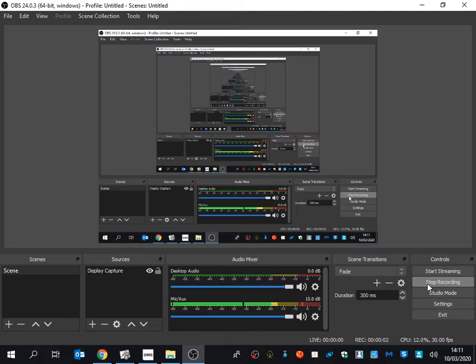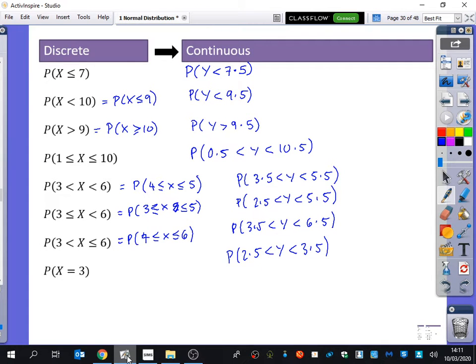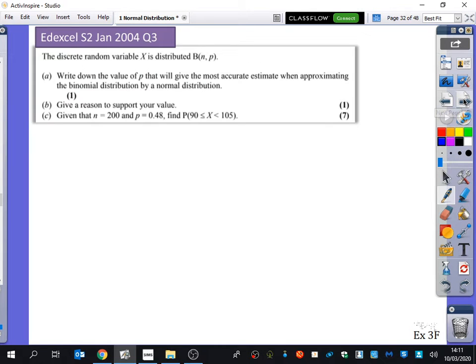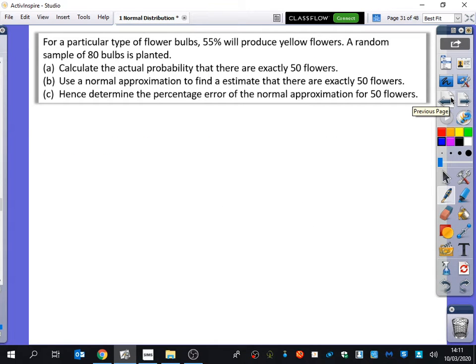That's now enough information for us to be able to decide how to answer a few questions. I'm going to do one question like this and then I'll do an exam question, and then afterwards we're basically going to spend the rest of the lesson just looking at some exam questions. For a particular type of flower bulb, 55% will produce yellow flowers. A random sample of 80 bulbs is planted.